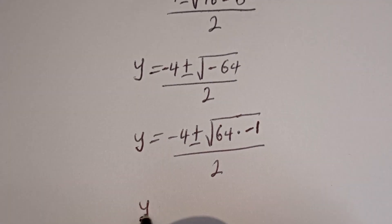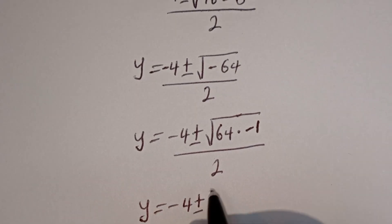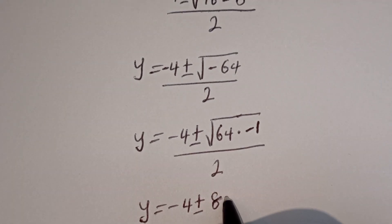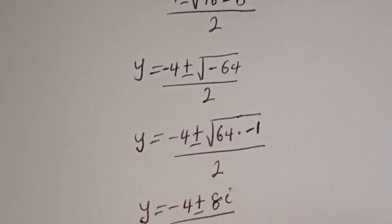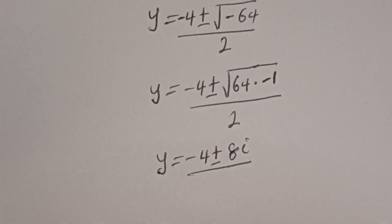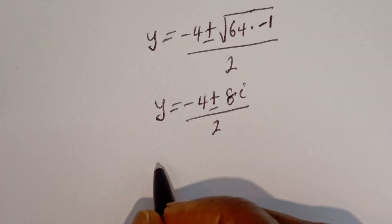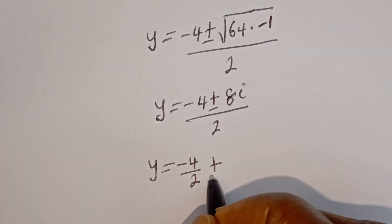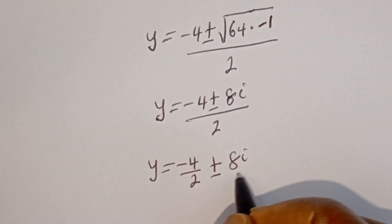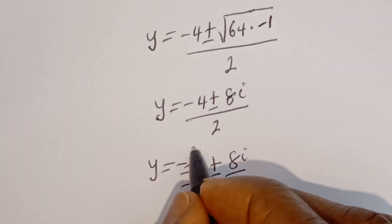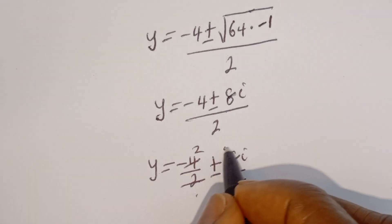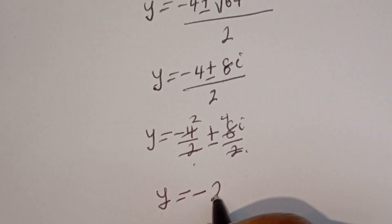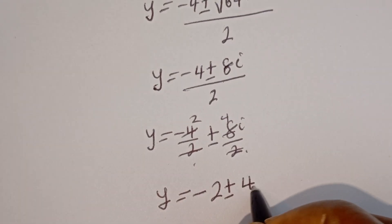Now y equals minus 4, plus or minus the square root of 64 — which is 8 — times the square root of minus 1, which is i, divided by 2. This gives minus 4 plus or minus 8i, divided by 2.